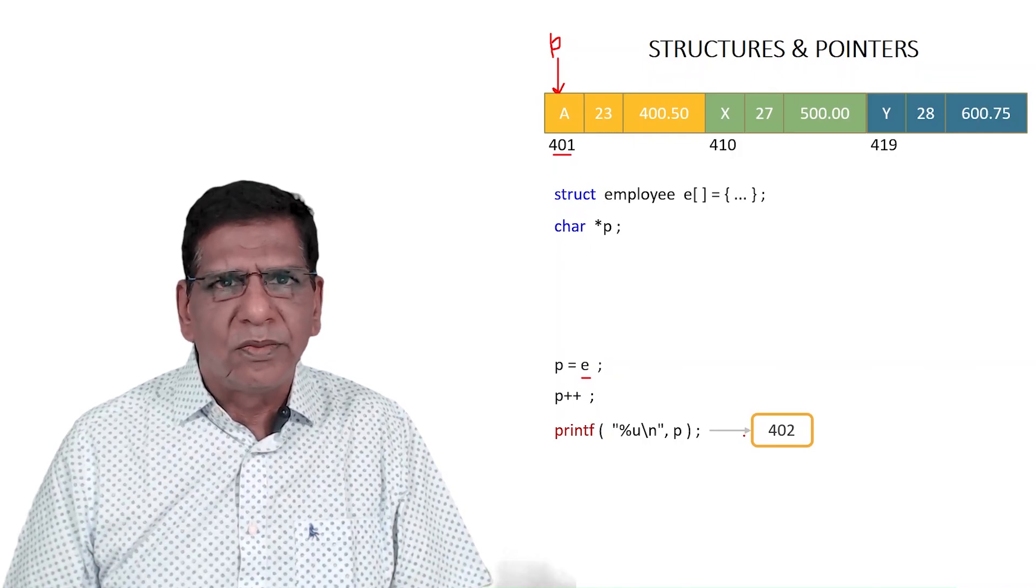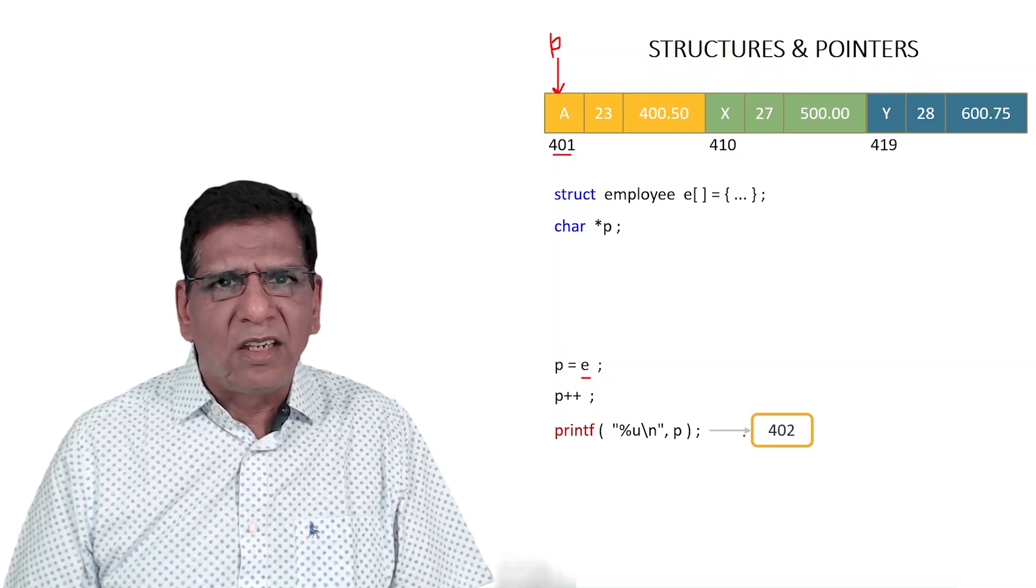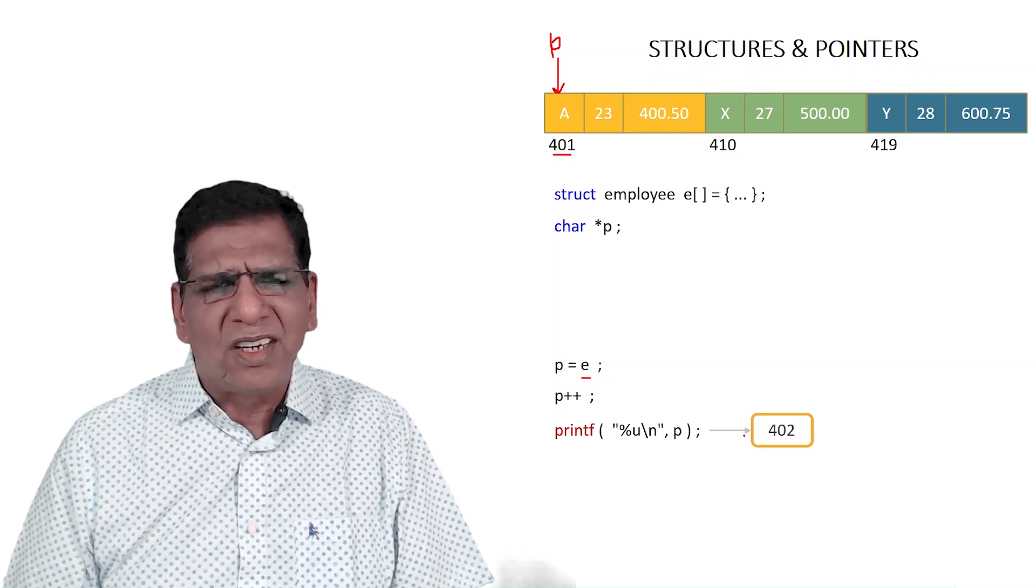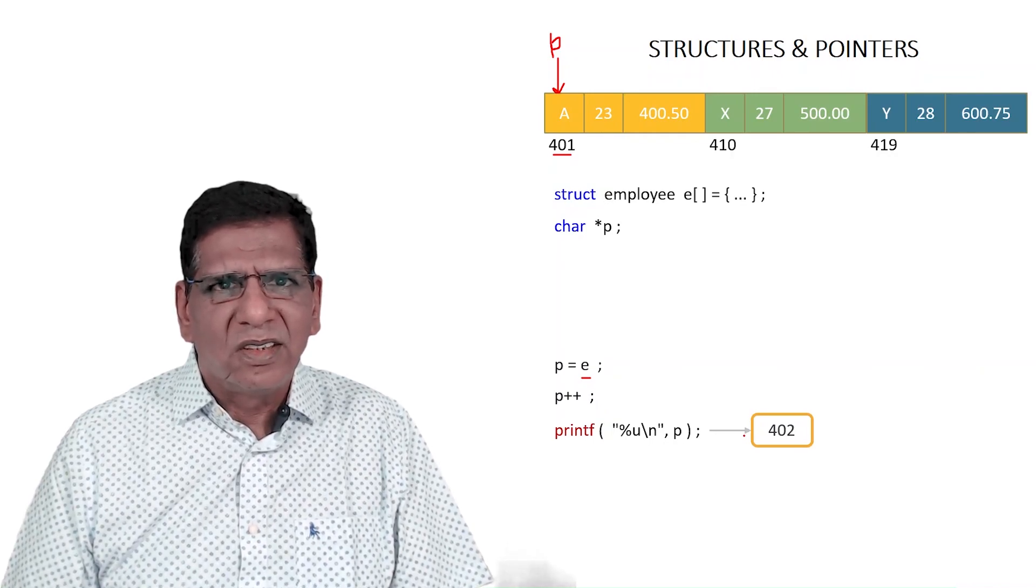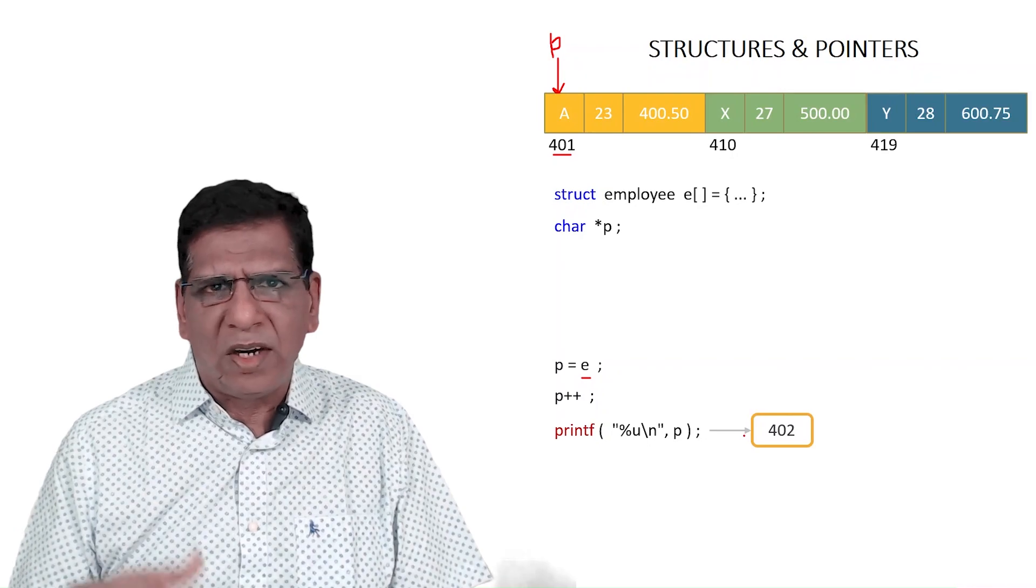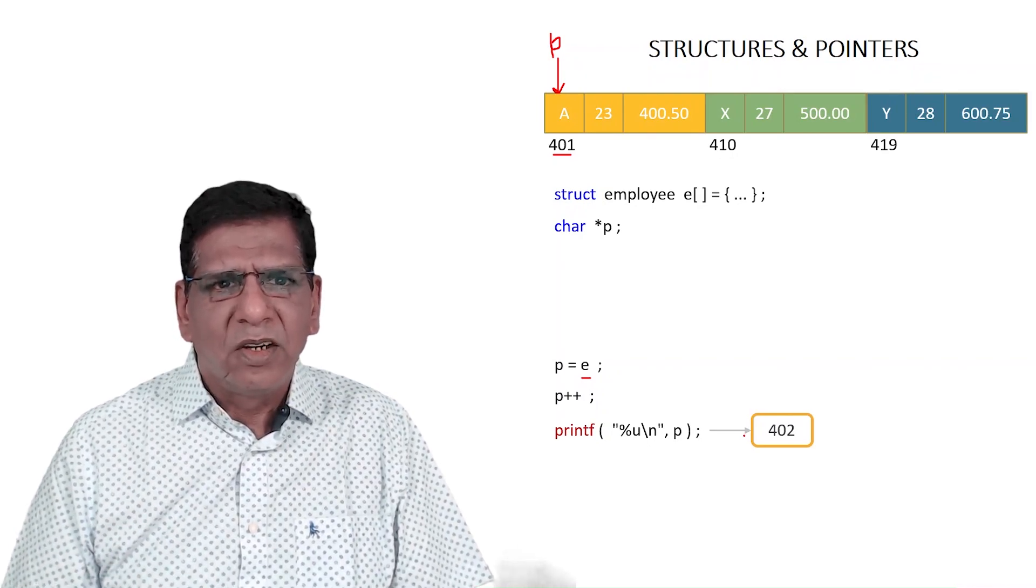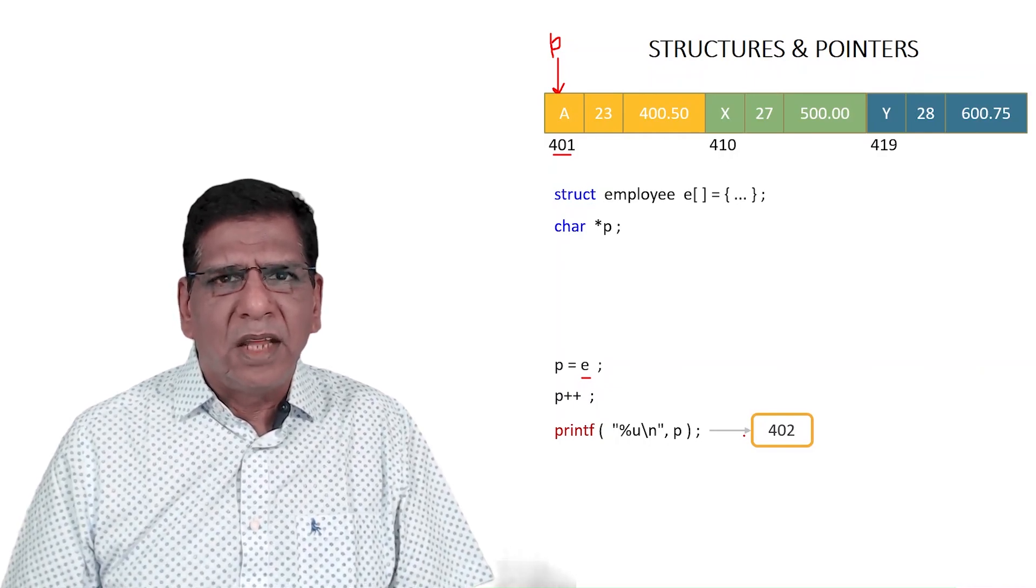Suppose I define P such that I should get 402, then how would the definition look? Well it should merely be a char pointer. Then only ++ will take me to the next char. Unless P is a char pointer, ++ on it will not take me to the next byte or next char. So I would have to define P as char star P.